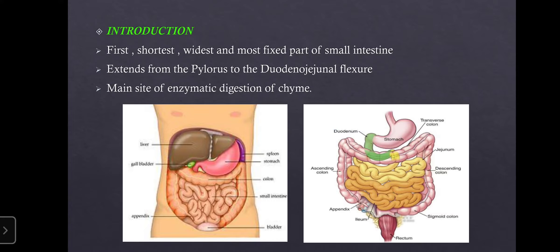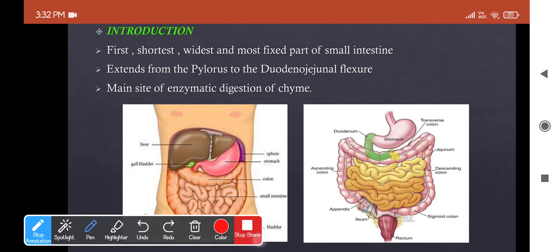We know we have small and large intestine. The small intestine is further divided into three parts: the proximal duodenum, middle jejunum, and the distal ileal part. The duodenum is the first, shortest, widest, and most fixed part of the small intestine. It extends from the pylorus, the end part of the stomach, up to the duodenojejunal flexure, where it continues as the jejunum. This is the main site of enzymatic digestion of chyme.